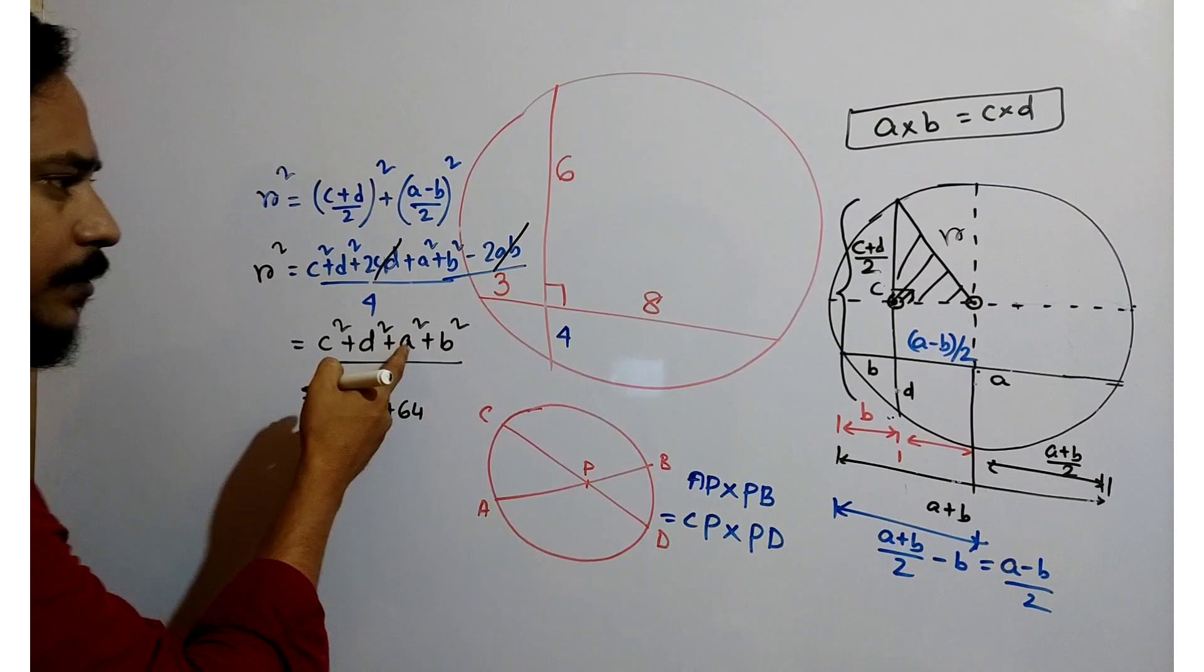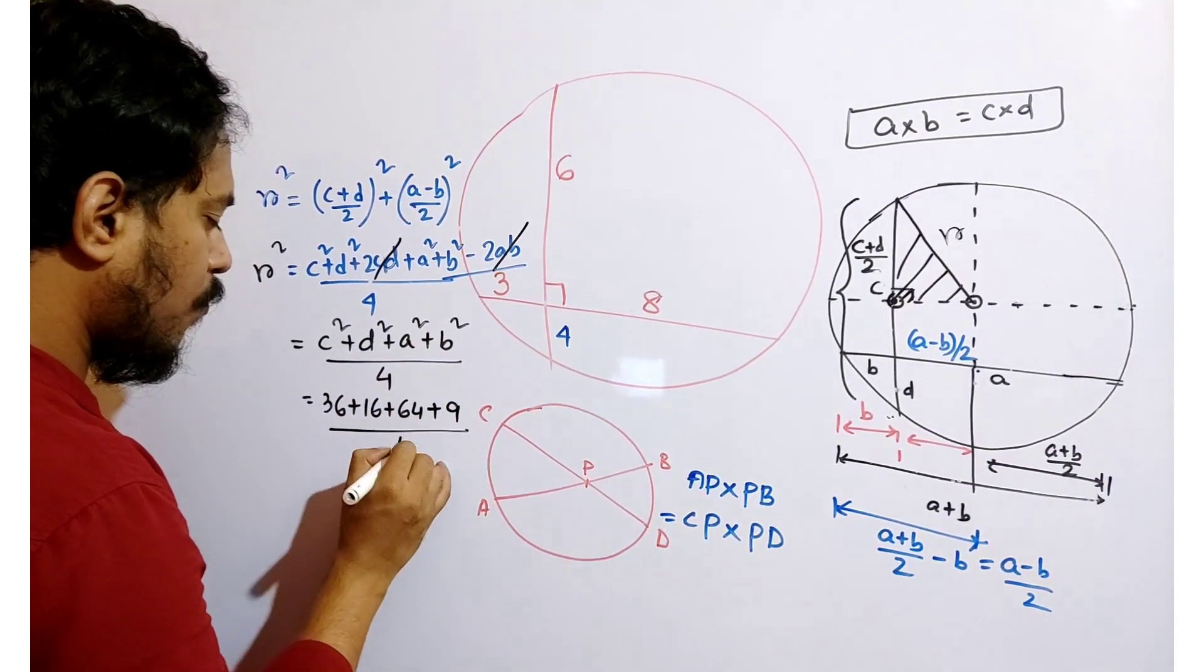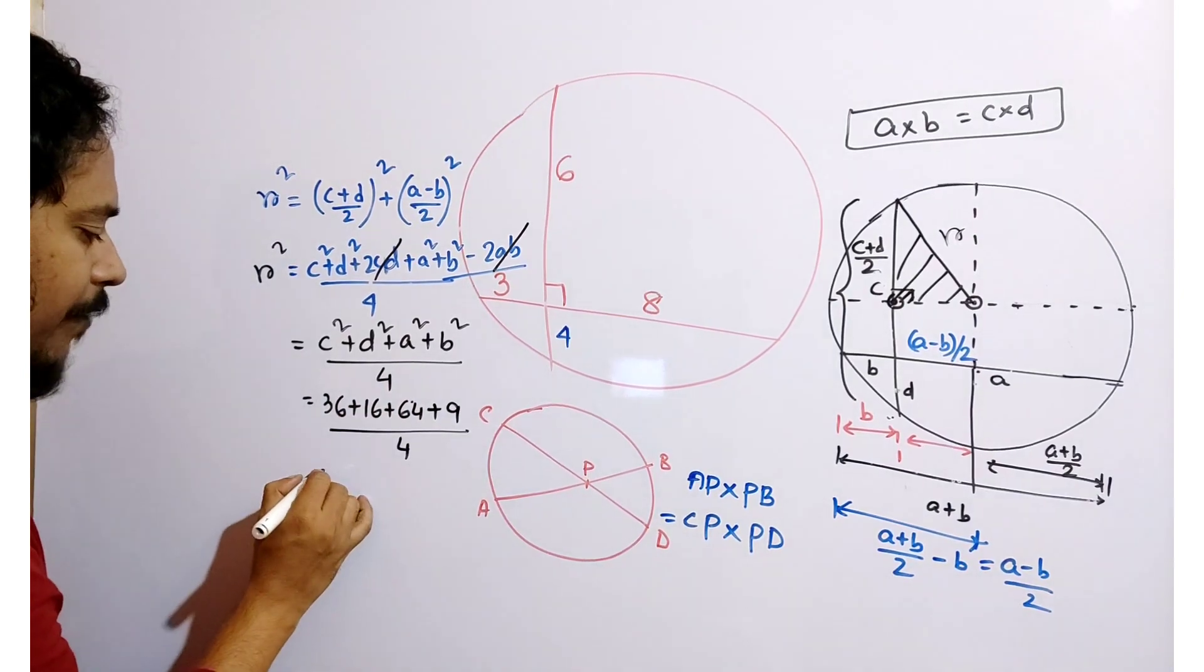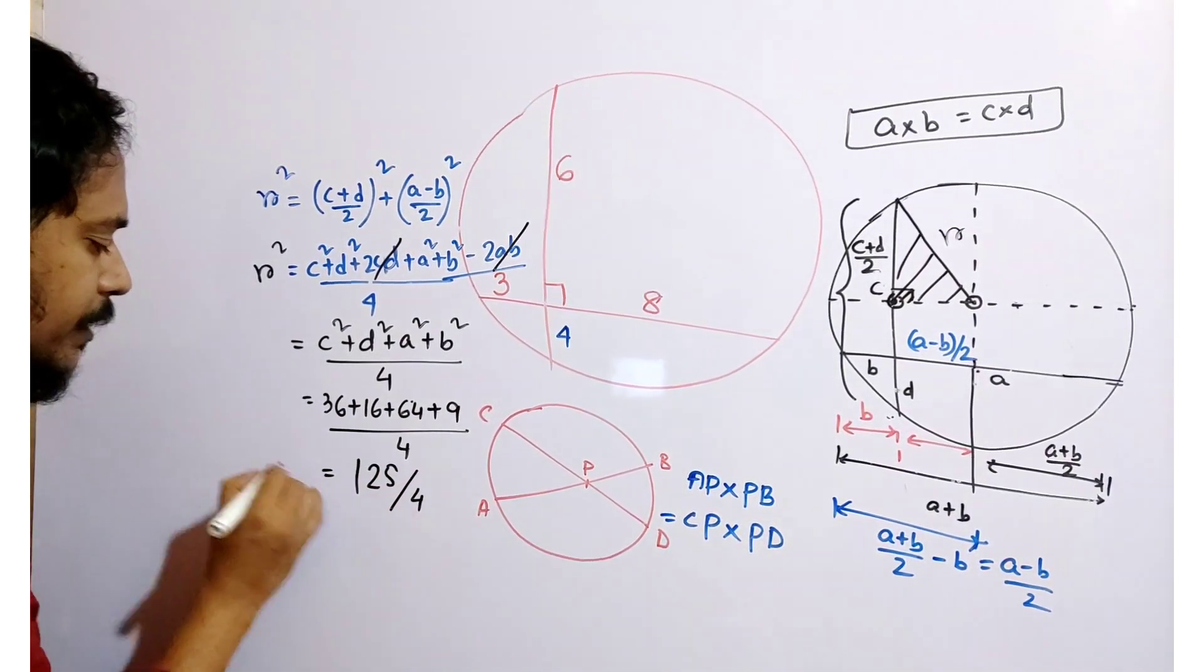And what about B? B is 3, so B square is 9. 36 plus 16 plus 64 plus 9 equals 125. 125 by 4.